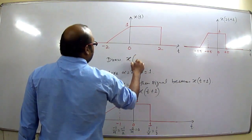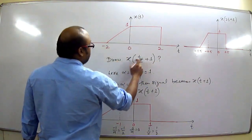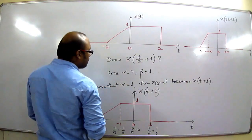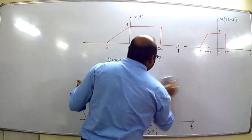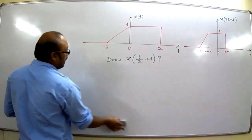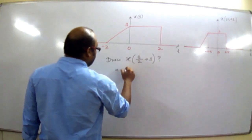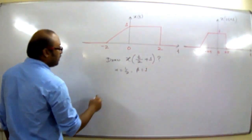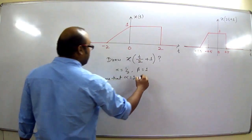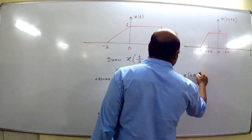Now let us draw X(T/2 + 1). X(T) is given and we have to draw X(T/2 + 1), meaning we modify X(T) in the form of X(αT + β). Here α is 1/2 and β is 1. First of all we consider α is 1 and draw X(T + 1).